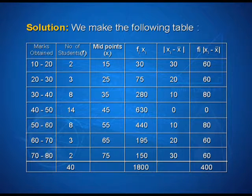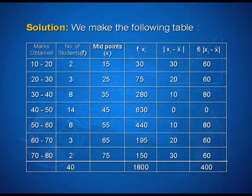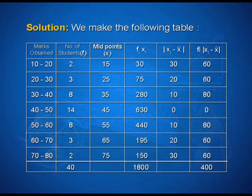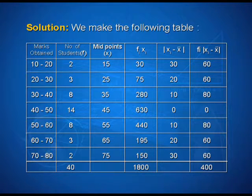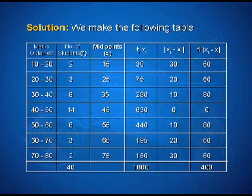In the fourth column, we compute fi × xi: 2×15=30, 3×25=75, 8×35=280, and so on. The summation of fi×xi comes to 1800, and the sum of frequencies is 40. We then calculate |xi − x̄| as 30, 20, 10, 0, 10, 20, and 30. The products fi×|xi − x̄| are: 2×30=60, 3×20=60, 8×10=80, 14×0=0, 8×10=80, 3×20=60, and 2×30=60. Their sum is 400.